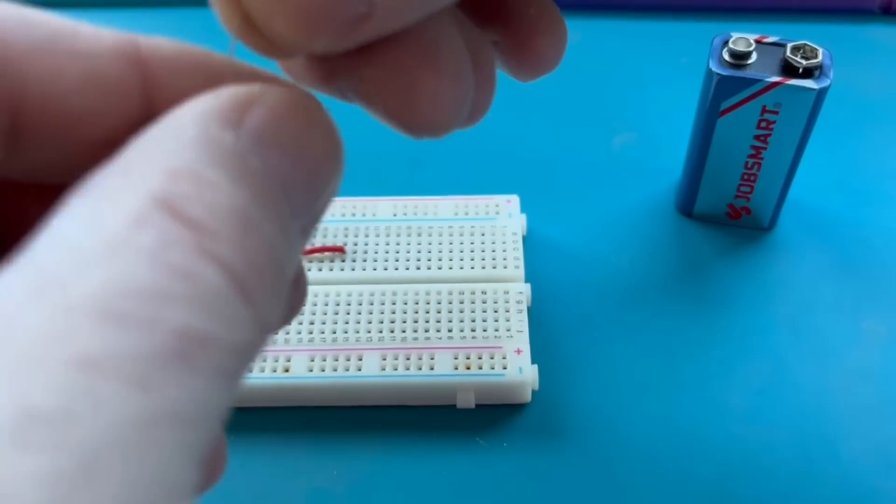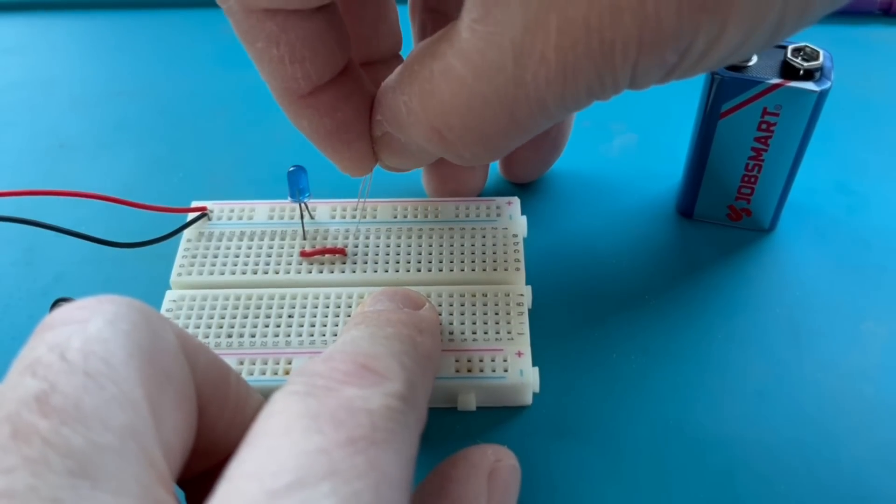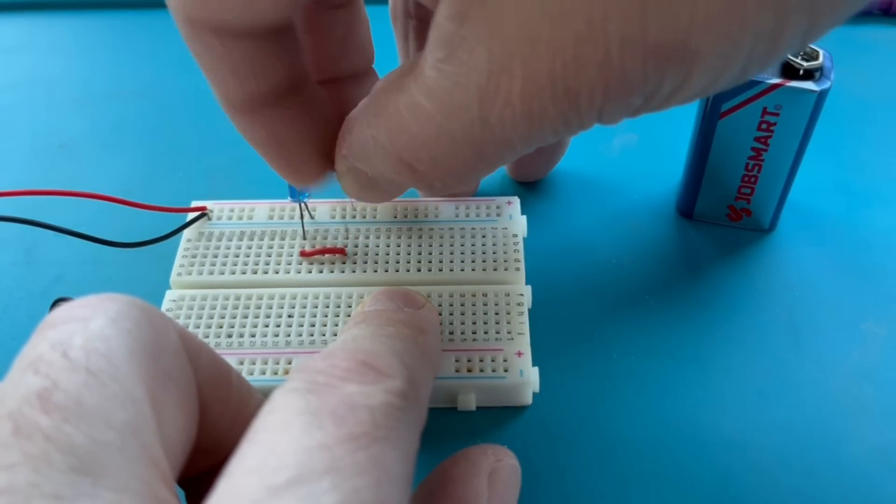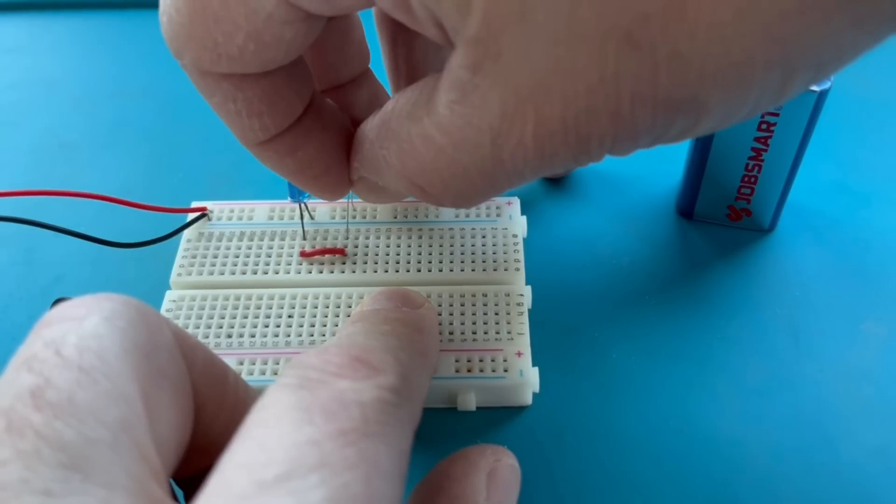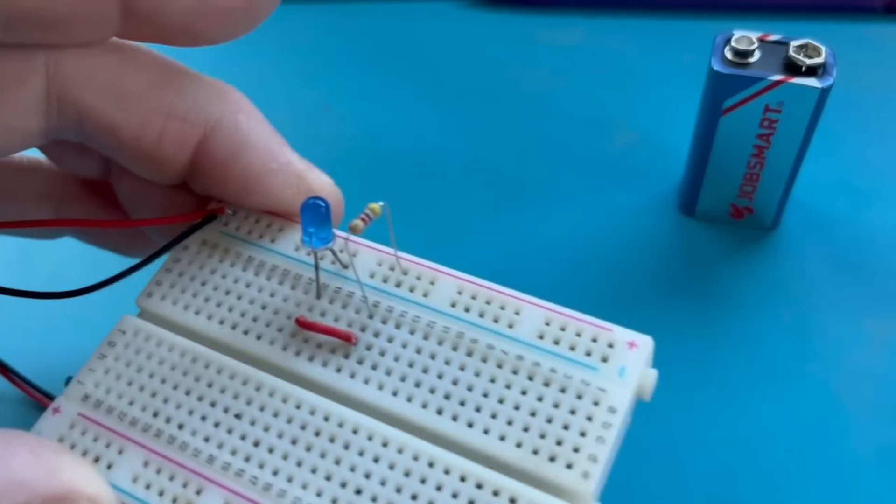We're just going to use a sufficiently large resistor. This is a 4.7 kilo-ohm resistor. We're just going to use it to protect our LED. We don't want it really bright anyway. So this is going to go to the positive rail and then to our jumper to go back to the anode side of our LED.